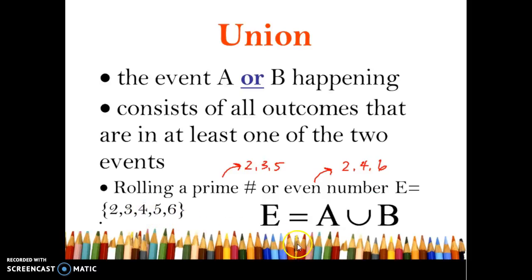All of these are our options but we're not going to include 2 twice. So we would just say 2, 3, 4, 5, and 6. So union is or and the symbol we use for that is a U, kind of like a capital U which you'll see later on.